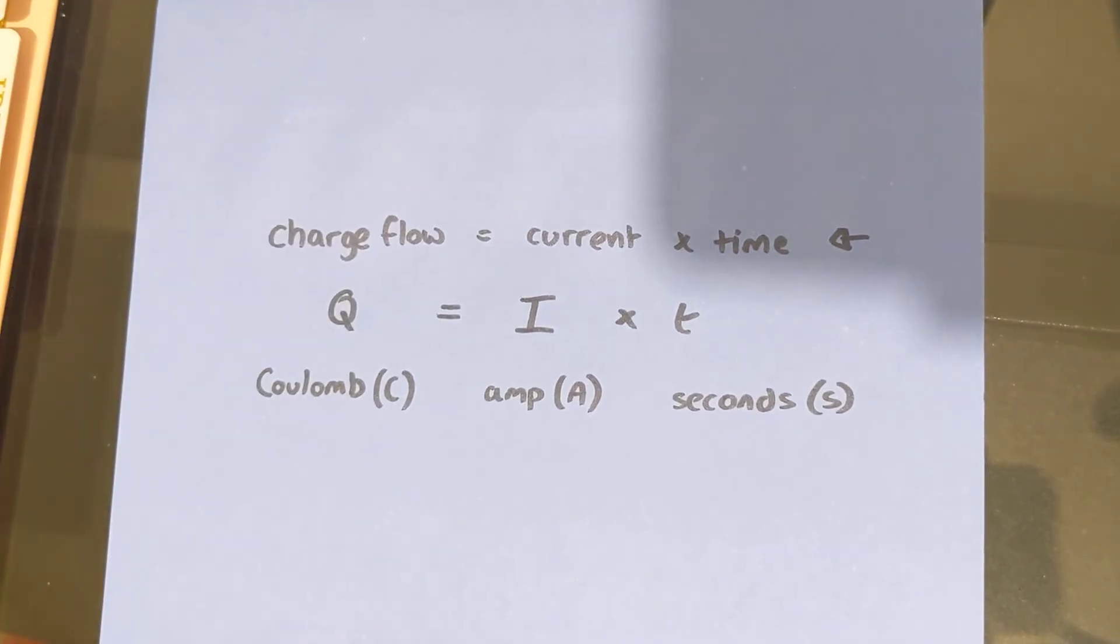Another key point to be aware of is that a current has the same value at any point in a single closed loop. So in series circuits, current is the same at any point in the circuit.